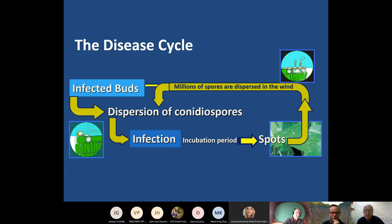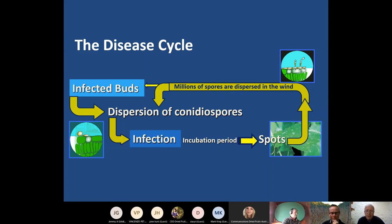If spray coverage isn't sufficient, infection can continue. The spore takes a little while to germinate on a leaf and grow into it before producing new spores — that incubation period is the time between infection and spots appearing. Within four to five days, new spots produce new spores in the millions, damaging nearby buds and infecting those that will remain quiescent until next season. You can get millions of spores dispersed in the wind — like the COVID virus — with many infections occurring before you know what's happening.